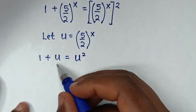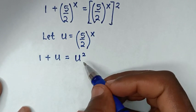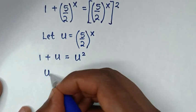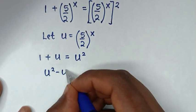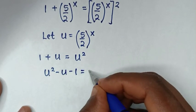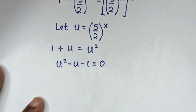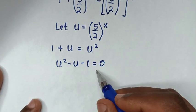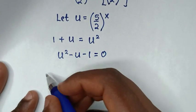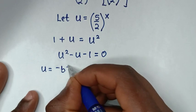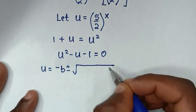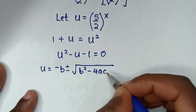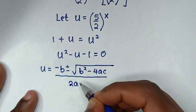In the next step, we rearrange by taking u and 1 to the right side, giving us u squared minus u minus 1 is equal to 0.